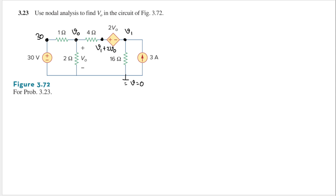Now let's assume the direction of the currents: this one is going to the right, this one is going down, this one is going to the right, this one is going down, and this one is going up. Now we can do KCL at V0 and also at V1.